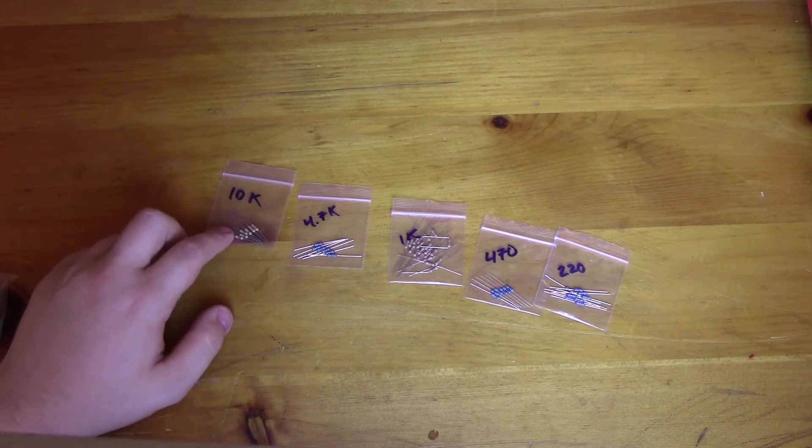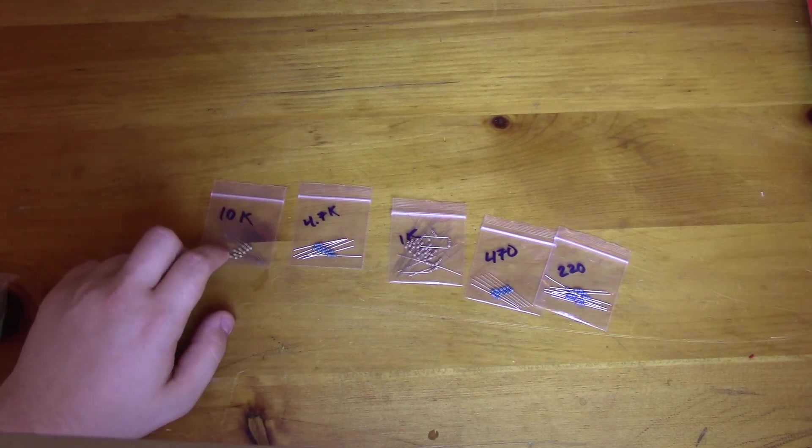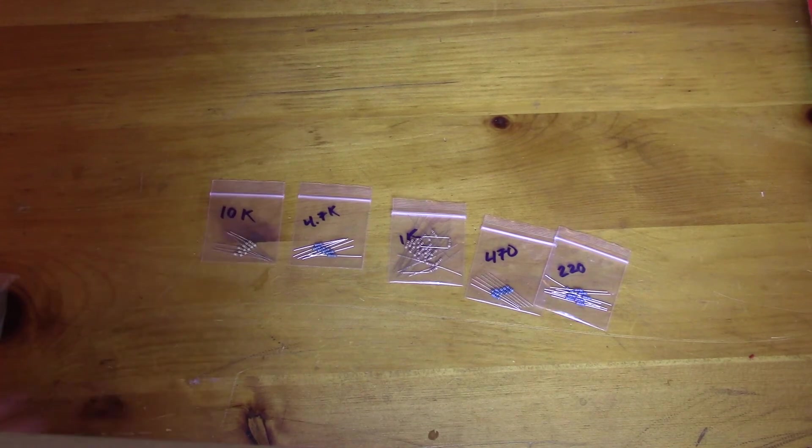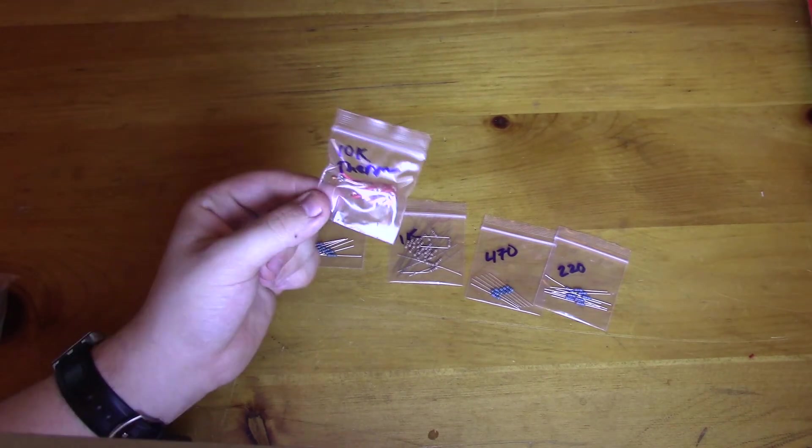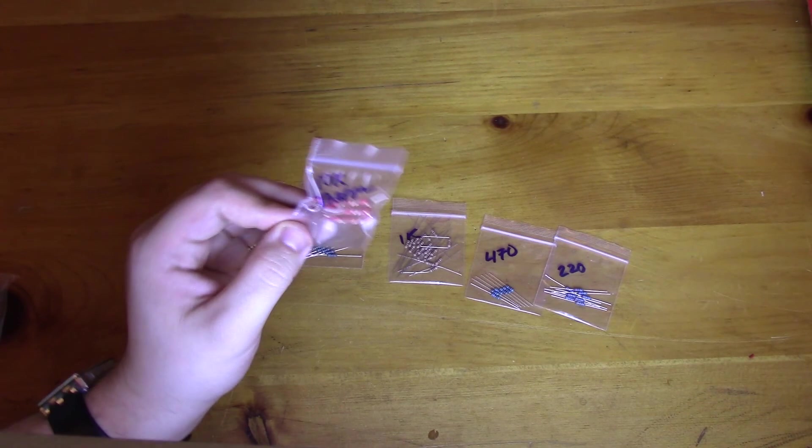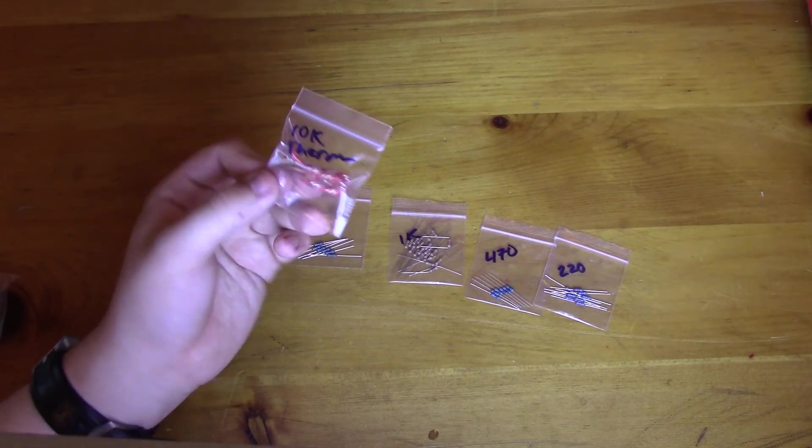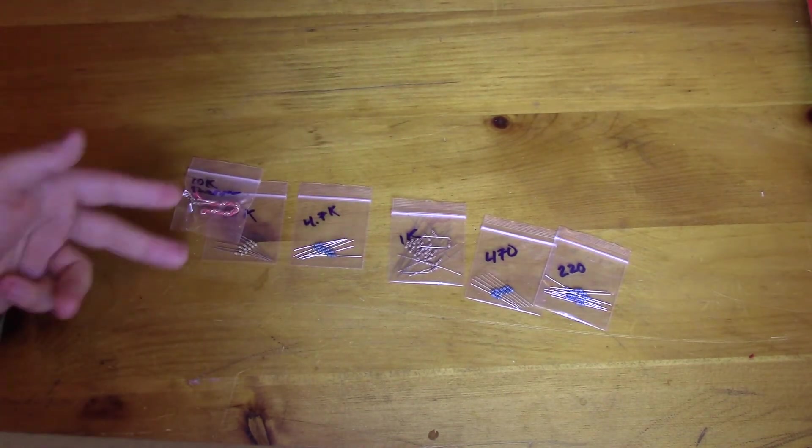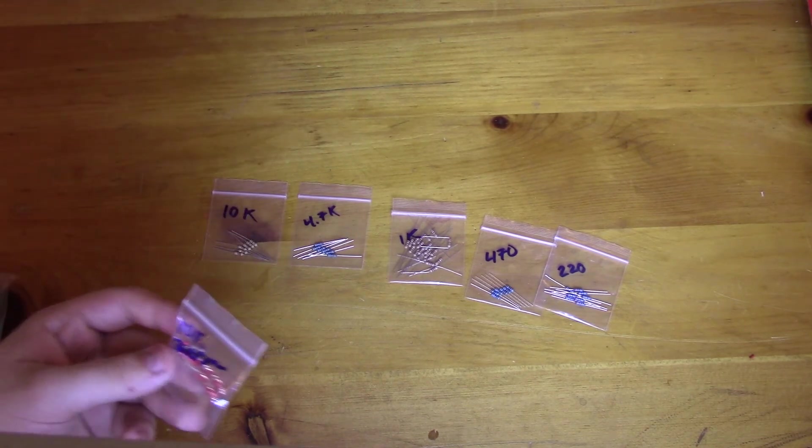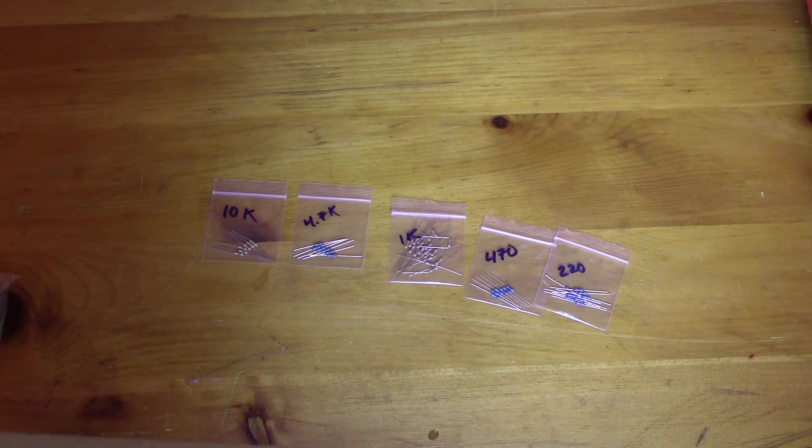Then I have 4.7K and 10K. The 10Ks, I tend to not need so much, although they do come in handy with certain sensors. Especially as we looked at here, I have this thermistor from an older video. And this is a 10K thermistor. So I use 10K resistor on it for my voltage divider into the microcontroller.